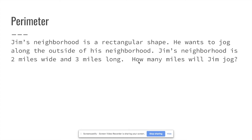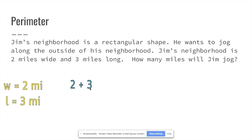The width is two miles and the length is three miles. But we're not just adding two plus three — that's the temptation, but it's not correct because it's a rectangle. We have a width of two miles on both sides and three miles on both sides, so we're doing two plus three plus two plus three.